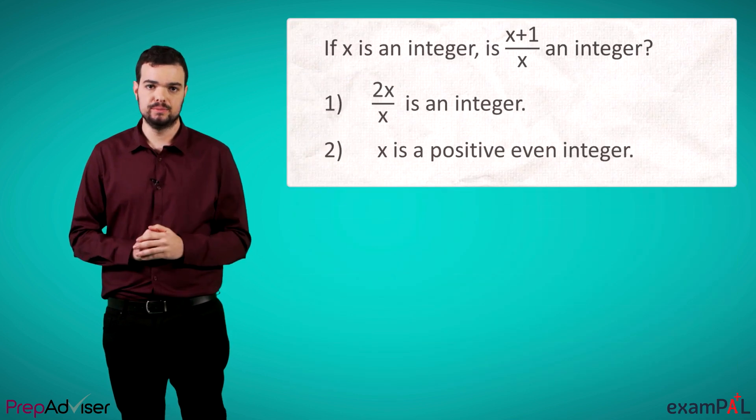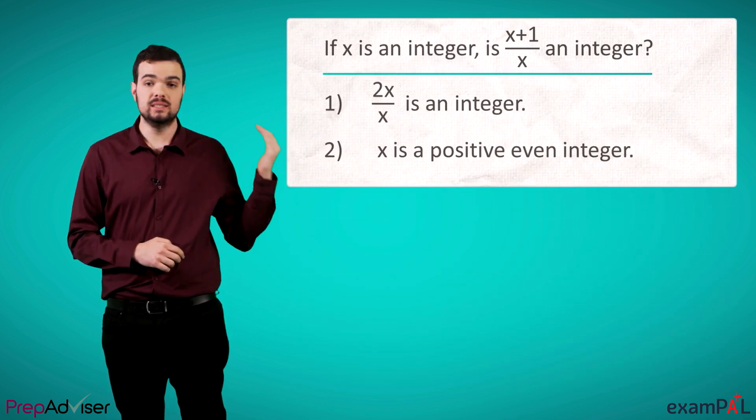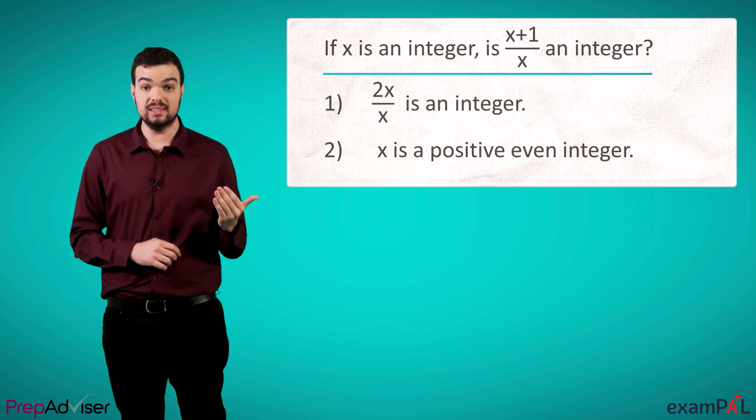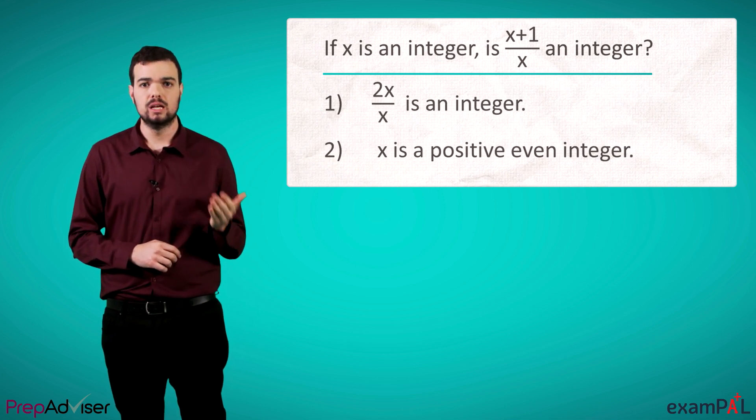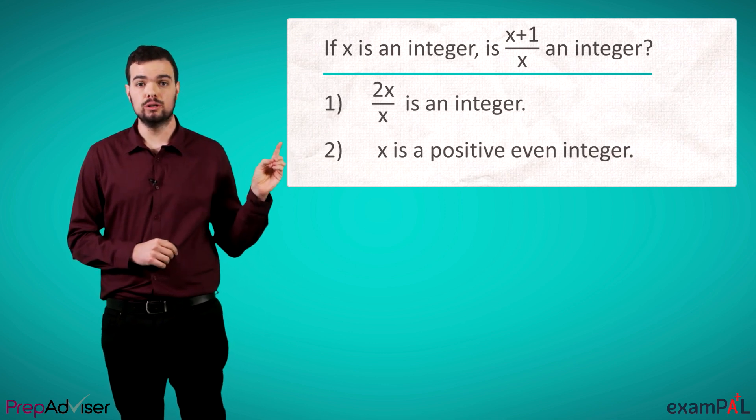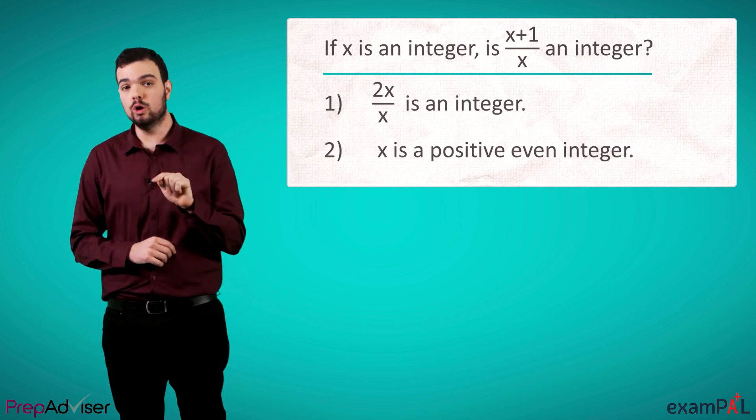Here is an example. If x is an integer, is (x+1)/x an integer? So what do we have here? X is an integer. That's the information we know is true.